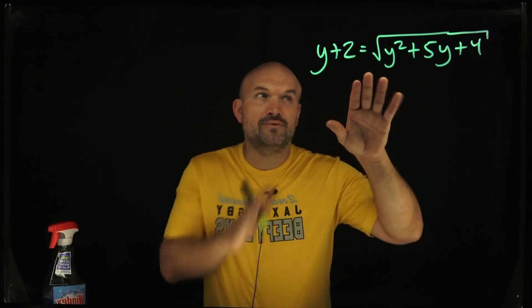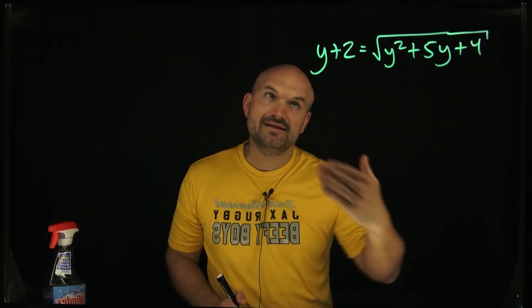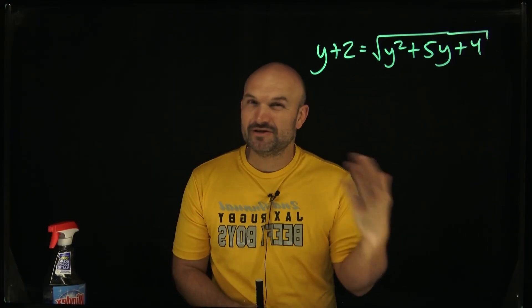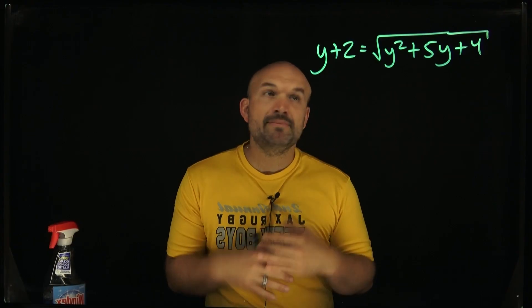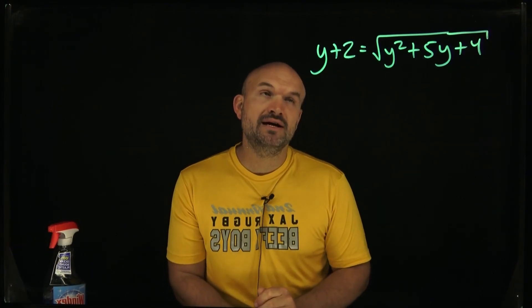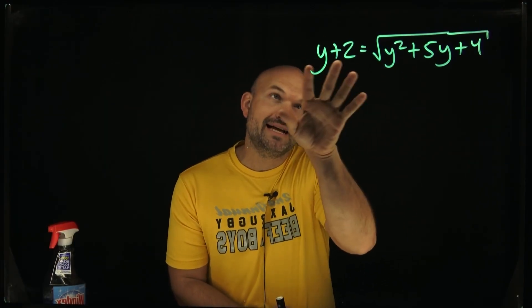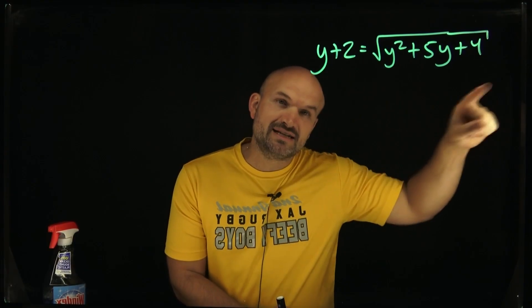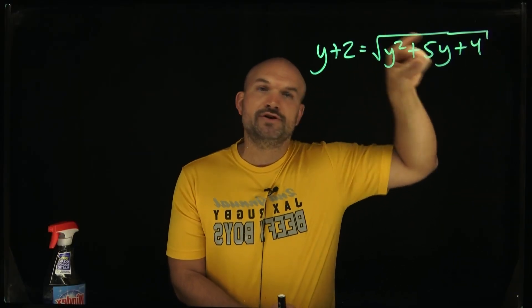On a problem like this you can see that we have a y on both sides and that can sometimes be pretty confusing for students, especially when we're solving radical equations because the process we have to go through can take a little bit of extra algebra. It's really important to understand that I cannot isolate or get the y plus 2 subtracted over here because these terms are all under the square root.